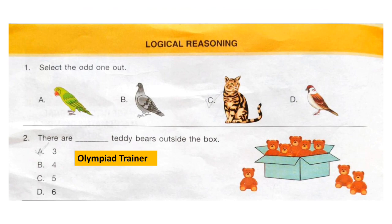Question 2: There are dash teddy bears outside the box. Count the number of teddy bears outside the box and select your answer. The correct answer is option A: 3.